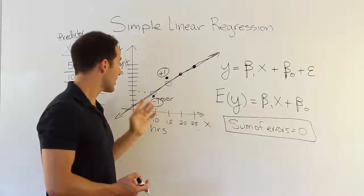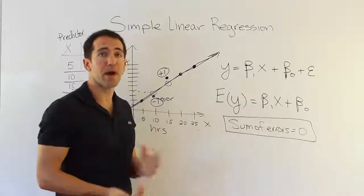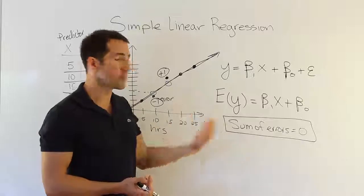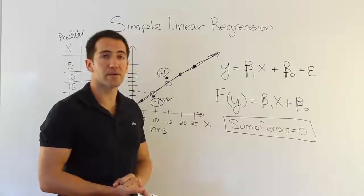So, that's really an important trait. You want to make sure whatever line that we pick, the sum of the errors is zero. You may say, well, how are we going to do that? Well, we're going to have formulas for that later. But I just want you to understand what these formulas do. So, first thing is the sum of errors is going to be zero.